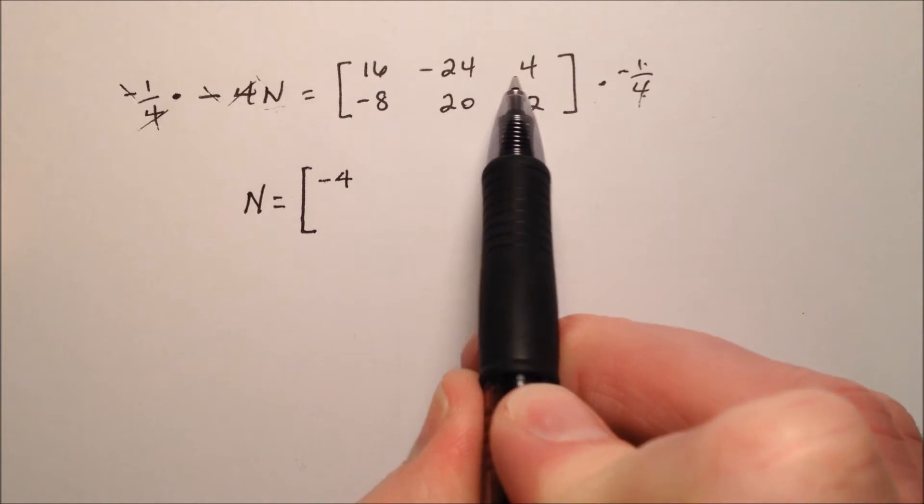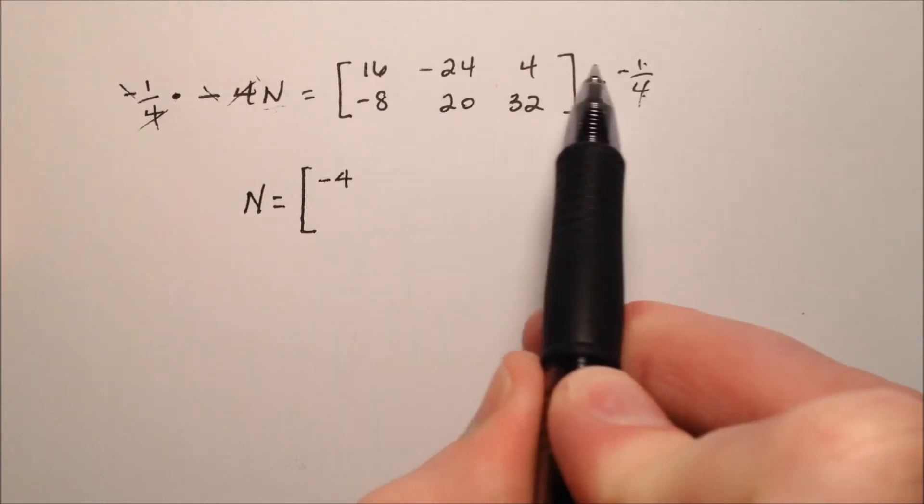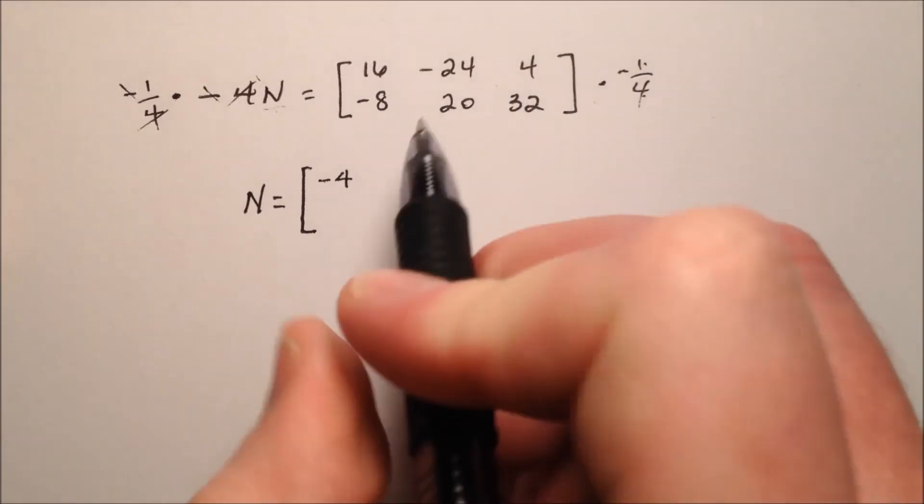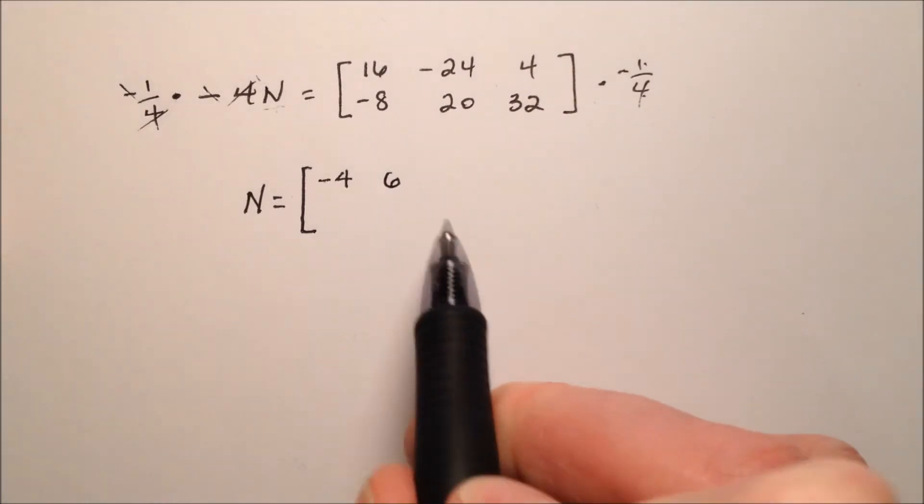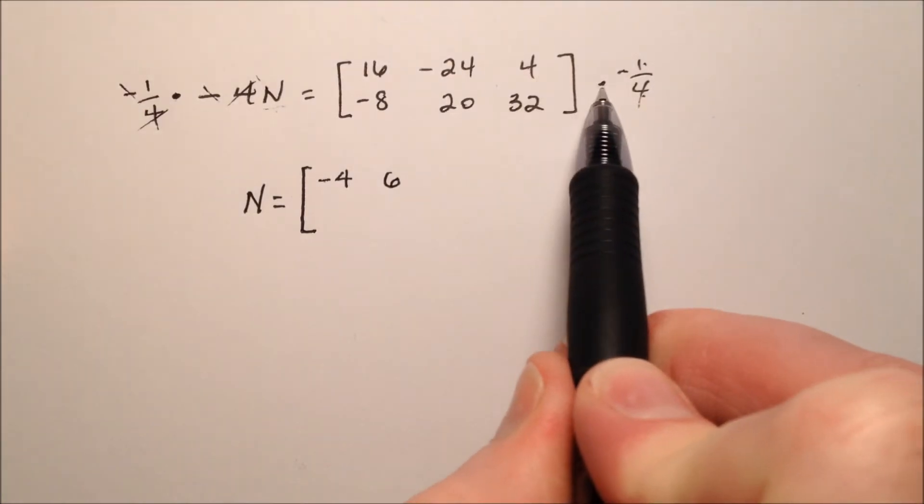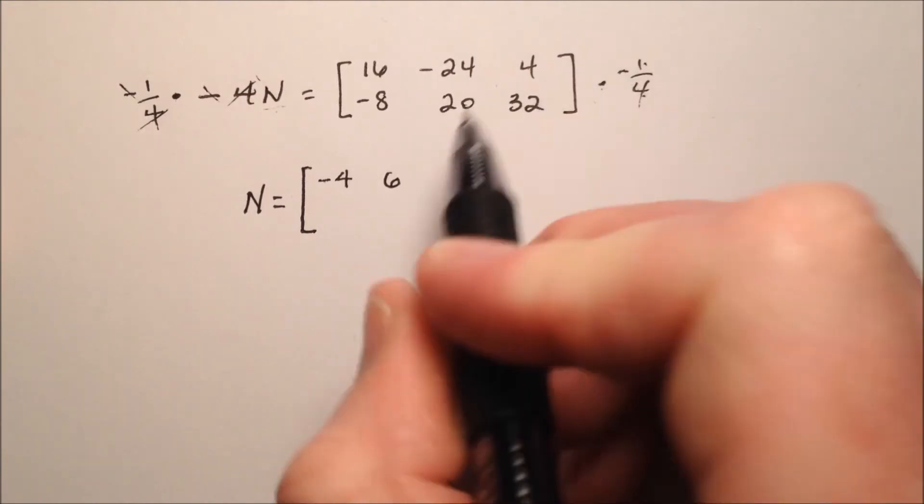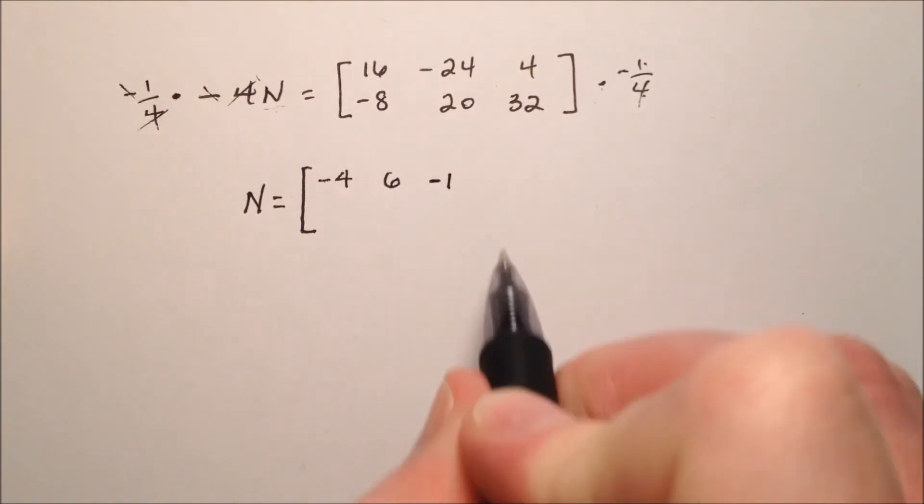Negative 24, when I multiply by negative, the negative goes away, becomes a positive, and 24 divided by 4 is 6. 4 times negative 1 fourth, so we change the sign, divide it by 4, so I'm going to get negative 1.